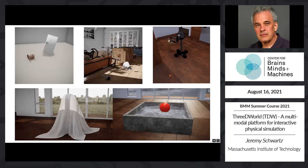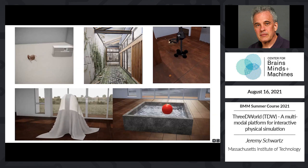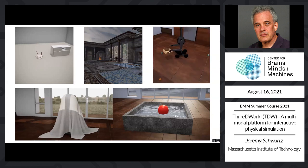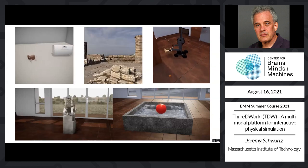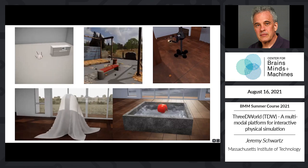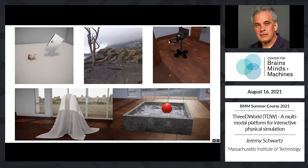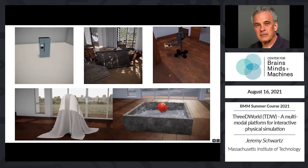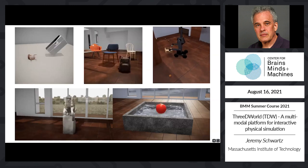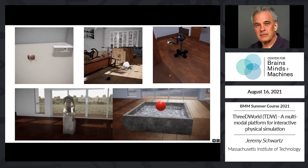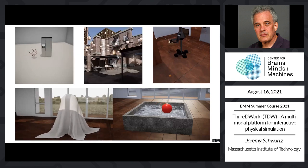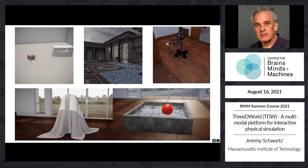TDW is a multimodal platform for interactive physical simulation. It's built on the state-of-the-art game development platform Unity. Unity is cross-platform, allowing us to run TDW on Windows, OSX, and Linux. It handles the image rendering, audio rendering, and physics for us. What you're seeing on the screen is some examples of TDW's simulation engine output including its advanced physics. I'll be going into a lot more detail about all the platform's capabilities during this tutorial.